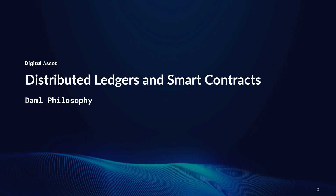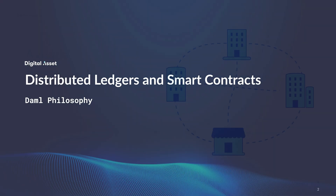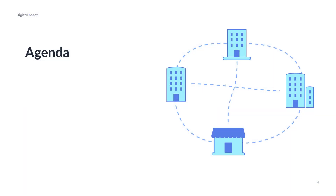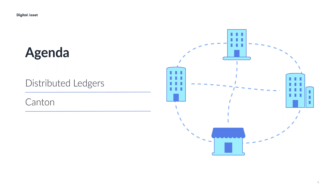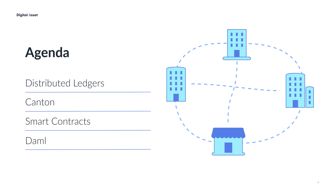We're going to take a look at what we mean by distributed ledger technology, often referred to as DLTs. What makes Canton a unique distributed ledger? Smart contracts, as well as what makes DAML unique as a smart contract language.